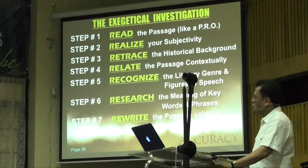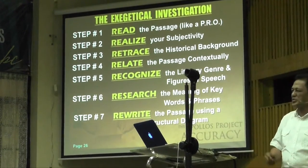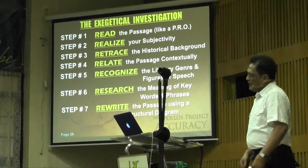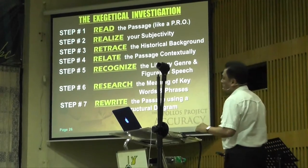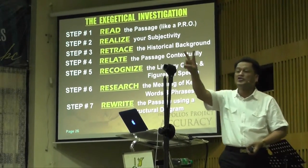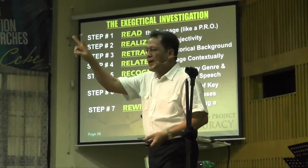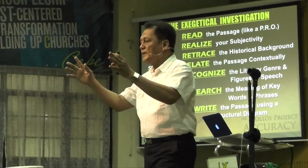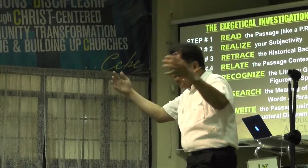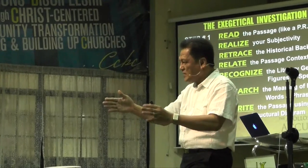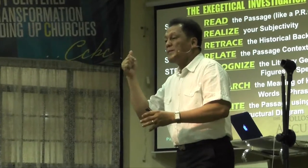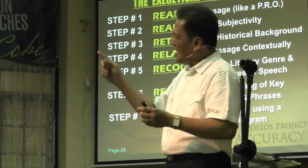Lastly, rewrite the passage using a structural diagram. Remember, you don't need all seven steps — it depends on your passage. Step number seven is limited to two types of genre: the poetic genre — you know it's poetic material in your Bible because the words are centered, not left-to-right margin — and the epistolary material, the epistles, which you can actually write a structural diagram for.